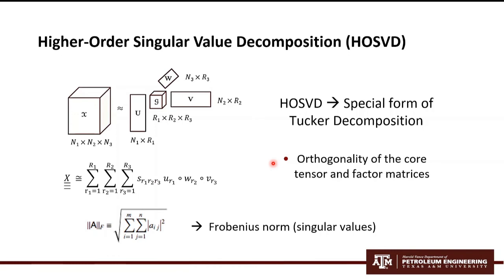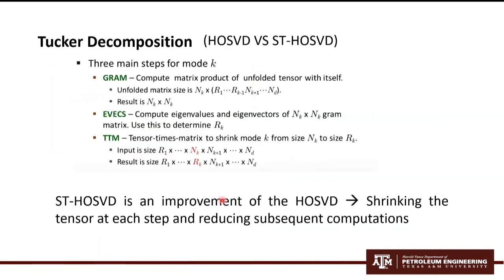Moreover, the singular values of this core tensor can be defined by the Frobenius norm that you can see here of the slices for the different modes. This is just the figure associated with it. Finally, a sequential HOSVD can be applied. This is only an improvement of the HOSVD, where basically the tensor shrinks at each step, reducing subsequent computations. Here you can observe the main steps of it.